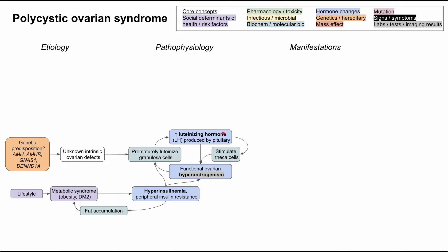In addition to the hormone changes listed, these changes cause other hormones to change throughout the body. When you have luteinization of the granulosa cells, those also produce estrogens, so estradiol and some of the other estrogens are higher in people with PCOS. Hyperinsulinemia leads to a low amount of sex hormone binding globulin — insulin levels and sex hormone binding globulin levels are inversely related. When sex hormone binding globulins are low, estrogens and androgens have less globulin to bind to, predisposing you to higher estrogen levels and higher androgen levels.